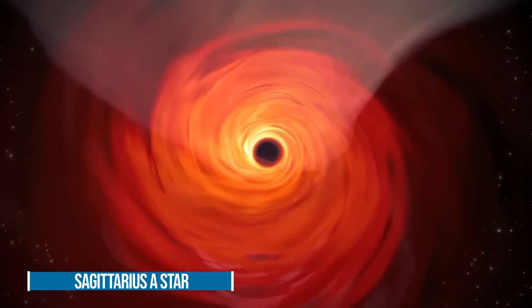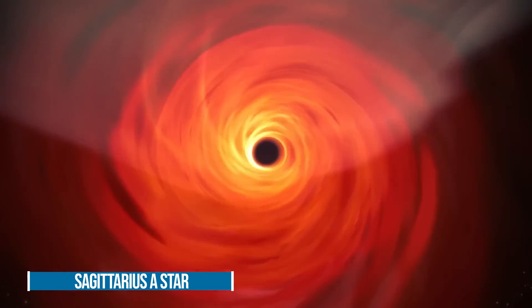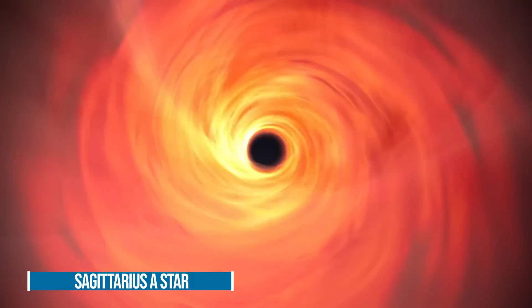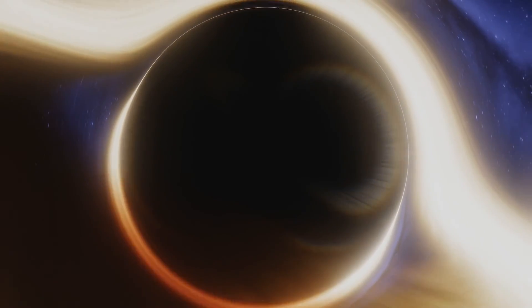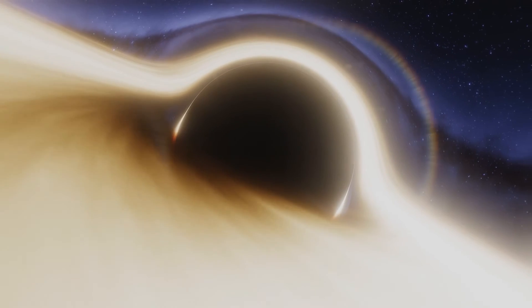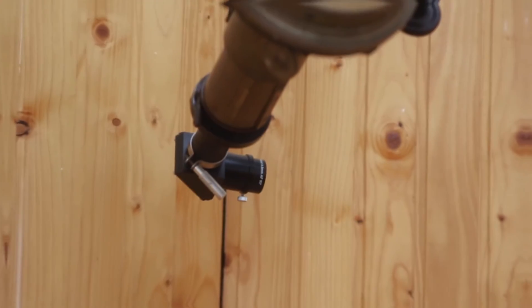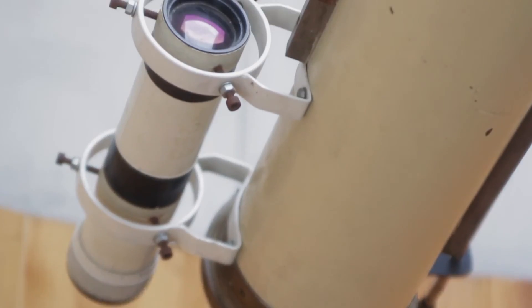Sagittarius A star is closer but less bright than the black hole in M87, and the distinctive flickering flares in the material surrounding it change the pattern of light on an hourly basis, which presents difficulties for astronomers.